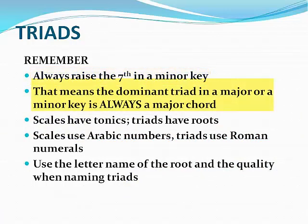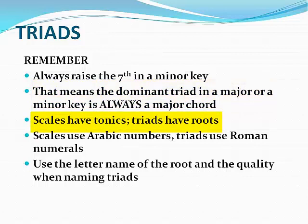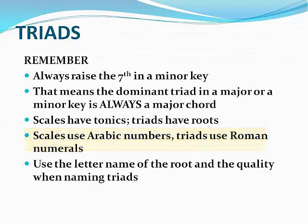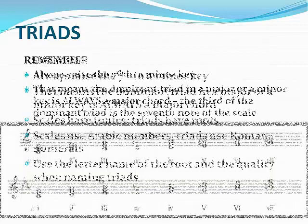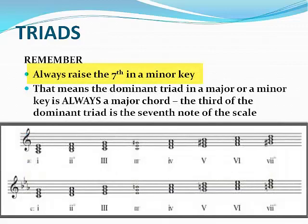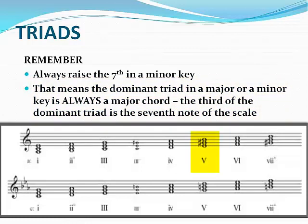What that means is the dominant triad will be a major chord in both a minor key and a major key. The first degree of the scale is called the tonic. Chords are built from the root. Scales use Arabic numbers to identify pitch, and triads always use Roman numerals. You can use the letter name of the root and the quality — major or minor — when naming triads. Always remember to raise the 7th note in a minor key, which means the dominant triad will always be a major chord. In this example, the 7th note is G and is raised from G to G-sharp, making the dominant triad a major triad, because G-sharp falls on the 3rd note of the triad built on the dominant.